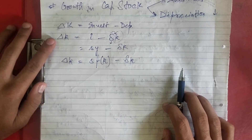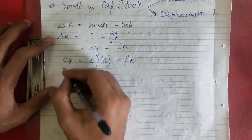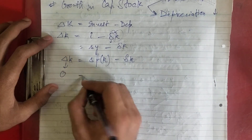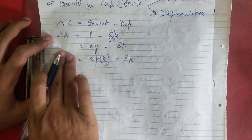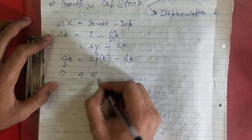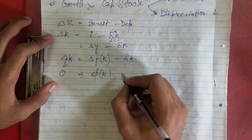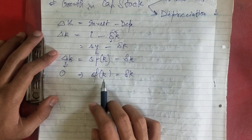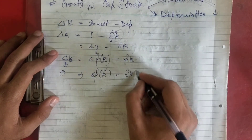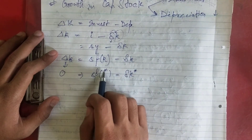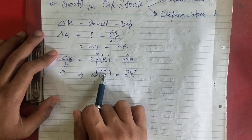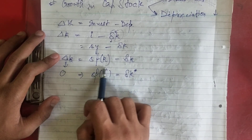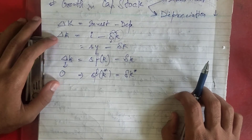At steady state, delta k equals zero. This implies that s·f(k*) = delta·k*, where k* is the steady state level of capital — the specific level at which delta k equals zero. This is the condition for the steady state level of capital.